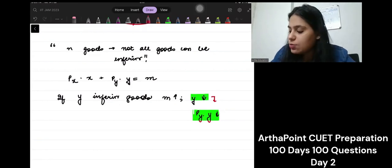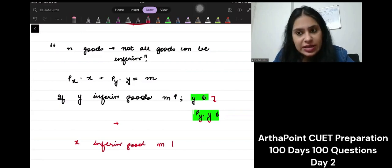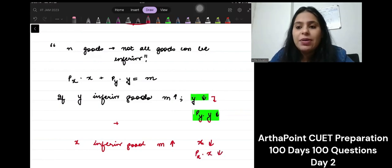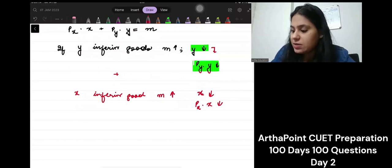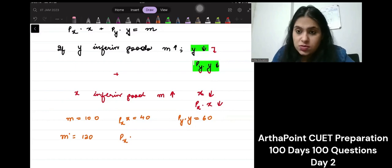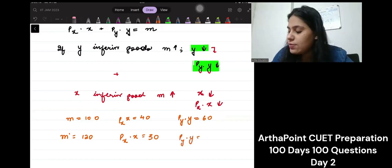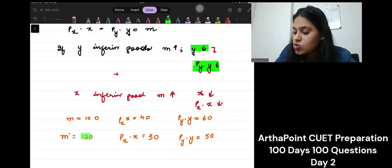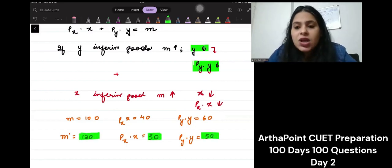Now suppose X is also an inferior good. When your income increases, you will decrease the demand of good X also. Suppose earlier my income was 100, I was spending 40 on X and 60 on Y. My income increased to 120. If both are inferior, I will spend less on both. That means when my income increased to 120, I'm only spending 30 plus 50, that is 80. I am below my budget line. This is not possible.